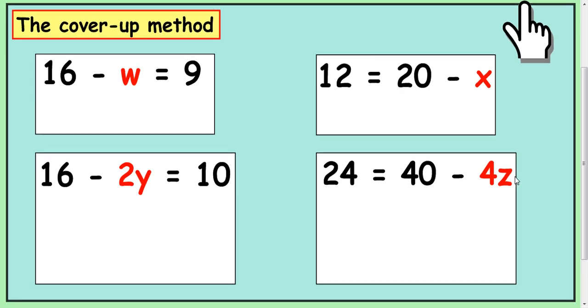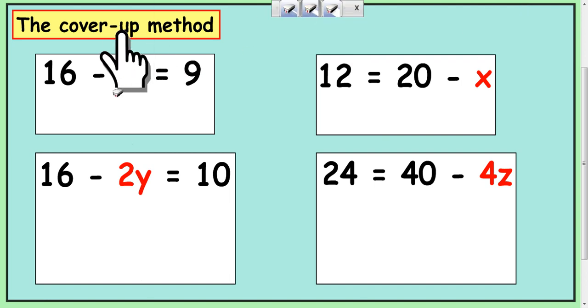Now, this is where the cover up is really good. When you have a subtract in front of the variable that you're trying to find. It's quite hard to do this with balancing, which we'll come to next. But, the cover up is dead easy with this. So, this is why it's quite handy. So, let's look at this. We want to find w. So, 16 take away what is equal to 9. And you think, well, that's going to be 7. That's your answer.